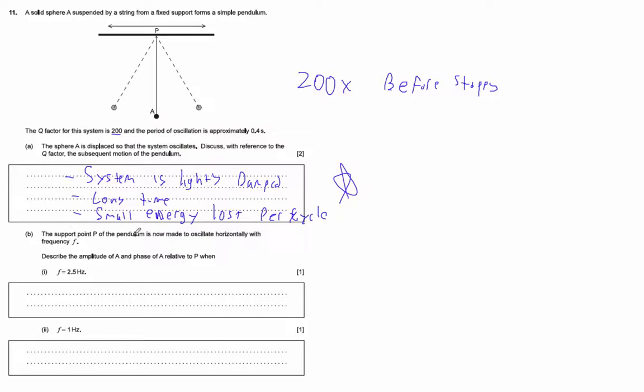Then it says the support point P is now made to oscillate horizontally with a frequency F. Describe the amplitude A and phase relative to P when F is 2.5 hertz. Let's think about this. They tell you the period here, so let's find that frequency.